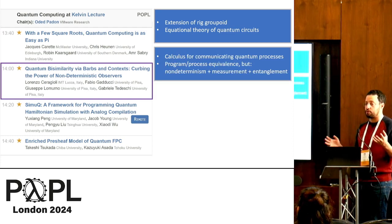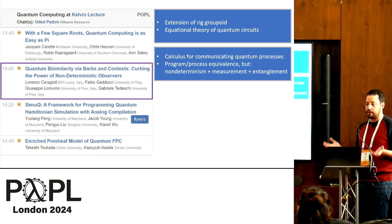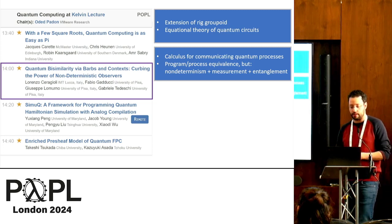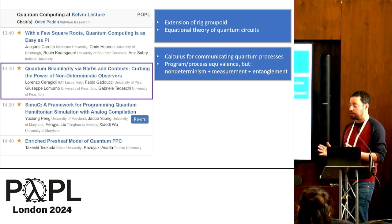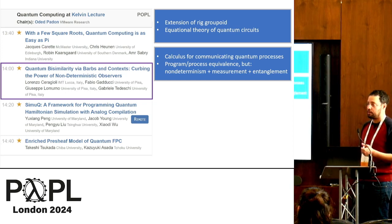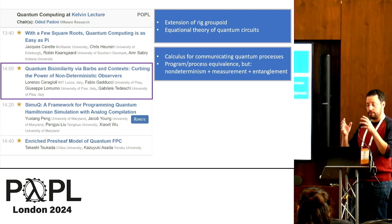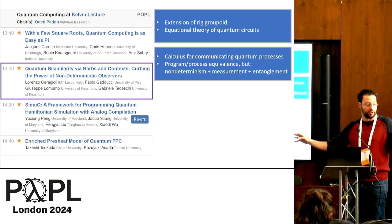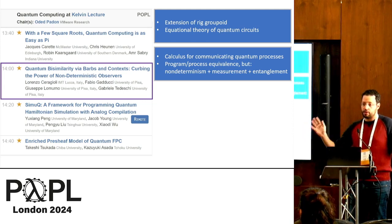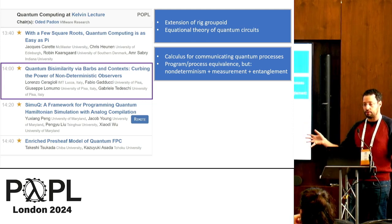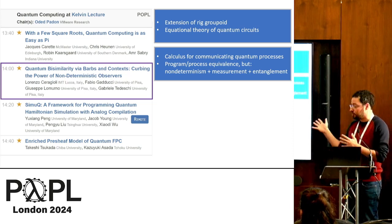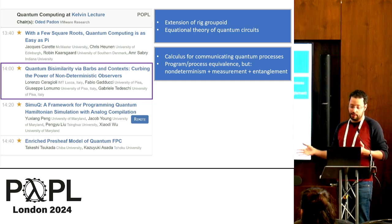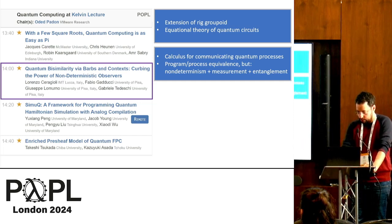The second paper talks about communicating quantum devices and defines a process calculus that describes them. And an interesting property there is whether two processes are equivalent or not, and there are many subtleties because of the combination of non-determinism, measurement, and entanglement. For example, let's say I have this entangled state that we talked about, and I send one qubit here and one qubit there on two different channels. So on each channel, I send something which is 50% 0, 50% 1. I can do it with an entangled state, and I can do it with a non-entangled state. And maybe some calculi would consider these two programs equal. Some others would not. And this is what this paper considers.